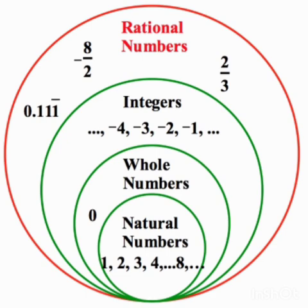These properties you should learn for your one-mark questions. 0 is the additive identity for rational numbers. 1 is the multiplicative identity for rational numbers. Negative of a number is called the additive inverse. If something is written in plus, your answer will be negative. If something is in negative, your answer will be positive.